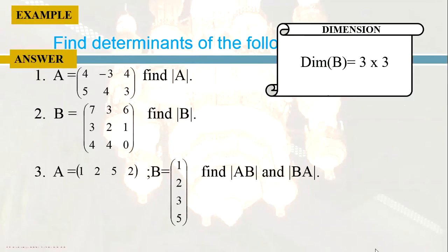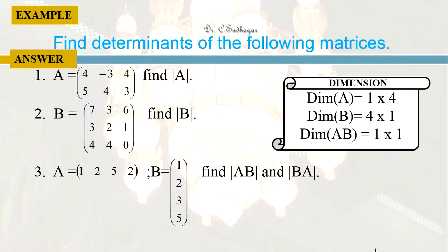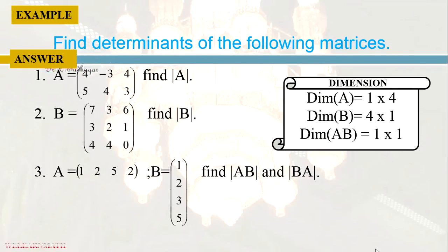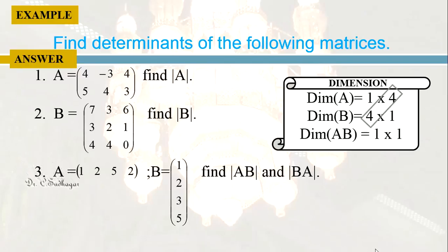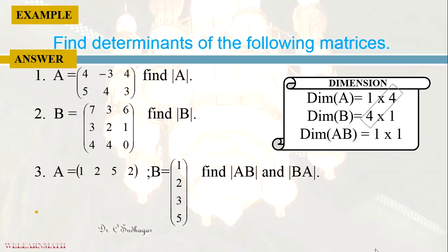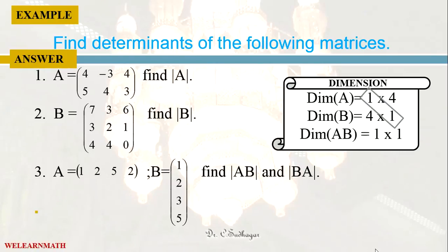Now let us take another question. A equals [1, 2, 5, 2] and B equals [1, 2, 3, 5]. Find the determinant of AB and the determinant of BA. The dimension of A is 1×4 and the dimension of B is 4×1. Since the inner dimensions match, it is possible to multiply. The product AB has dimension 1×1, so AB is a square matrix.